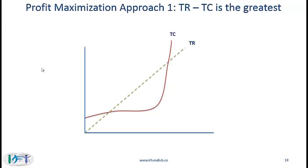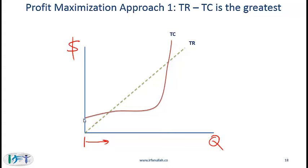Let's take the first approach, which is fairly straightforward. If we have a dollar figure on the y-axis and quantity of output on the x-axis, starting from a small quantity and increasing, we have a simple situation where total revenue is increasing linearly. The total cost obviously has a fixed cost component and goes up first slowly and then very fast. Here clearly we have a loss because the revenue is less than the cost. This is a breakeven point.